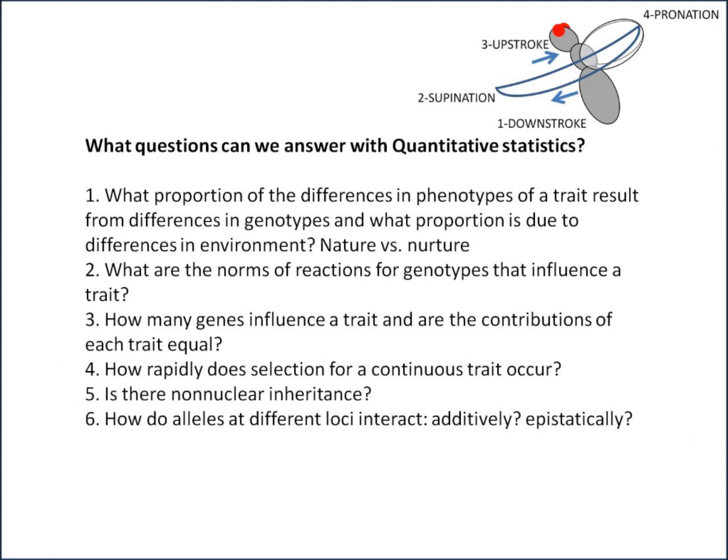What sort of questions can we answer with quantitative genetics? You can try to work out what proportion of the differences in phenotypes of a certain trait result from differences in genotype, and what proportion is due to the environment — the nature versus nurture argument. What are the norms of reactions for genotypes that influence a trait? How many genes influence a trait, and what are the contributions of each? How rapidly does selection for a continuous trait occur? Is there non-nuclear inheritance? How do alleles at different loci interact — additively or epistatically?